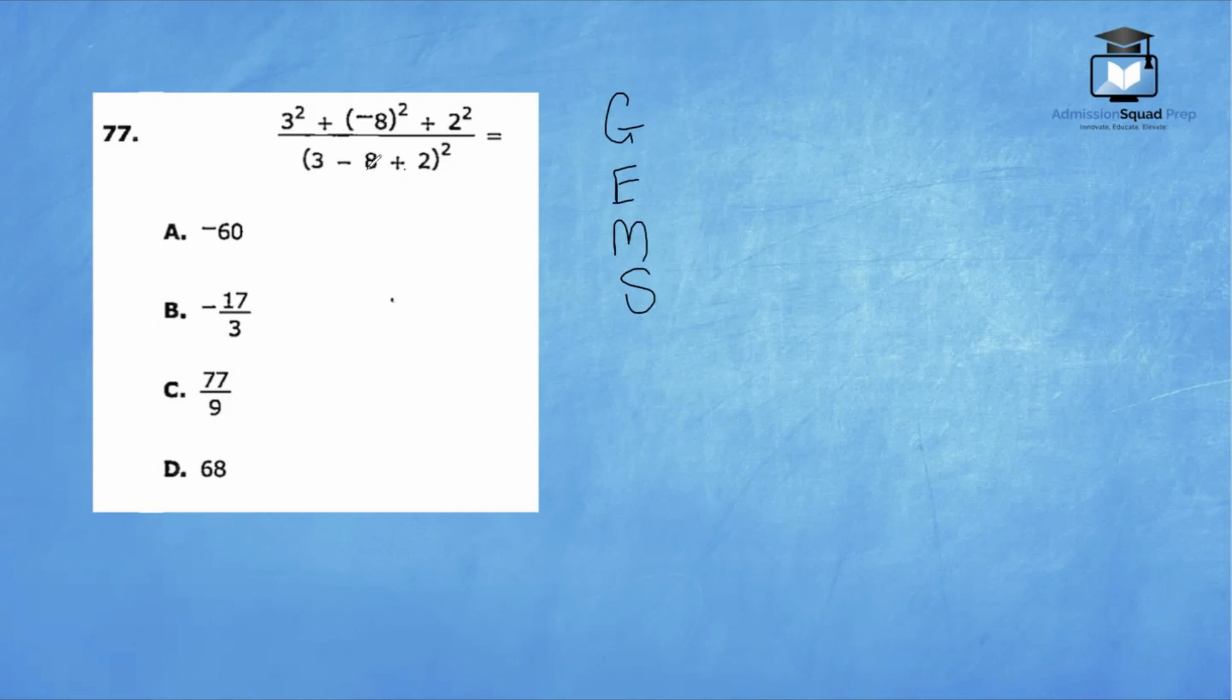3 minus 8 is negative 5, and negative 5 plus 2 is negative 3. So we have negative 3 in the denominator raised to the second power. In our numerator, we don't really have any operations happening within the parentheses, but we do see several exponents. 3 squared is 9, plus negative 8 to the second power is 64, plus 2 to the second power is 4. For our next step, we're going to go ahead and combine like terms in the numerator.